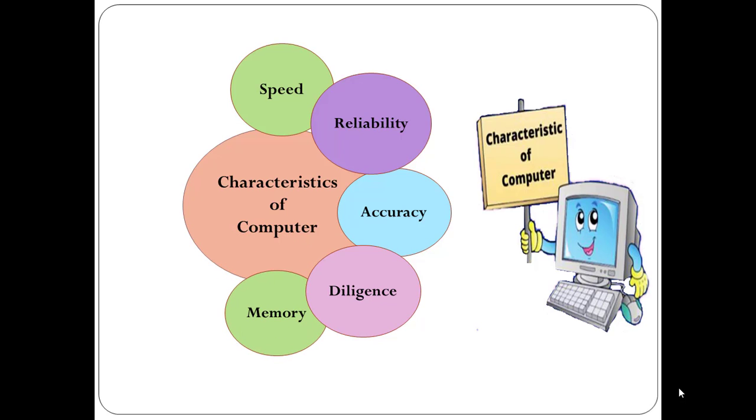The next is memory. A computer has built-in memory called primary memory where it stores data. Secondary storage are removable devices such as CD, pen drive, hard disk which are also used to store data.